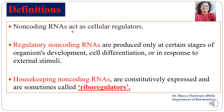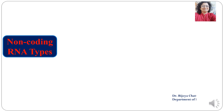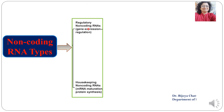The definition of non-coding RNA is that they act as cellular regulators. The regulatory non-coding RNAs are produced only at certain stages of an organism's development, cell differentiation, or in response to external stimuli — meaning they are not always active. While the housekeeping non-coding RNAs are those RNAs which are always expressed, that is they are constitutively expressed, and they are sometimes known as riboregulators. Non-coding RNAs can be classified into regulatory non-coding RNA and housekeeping non-coding RNA.